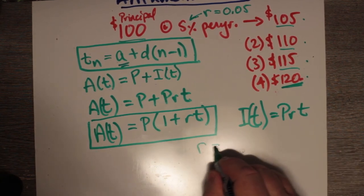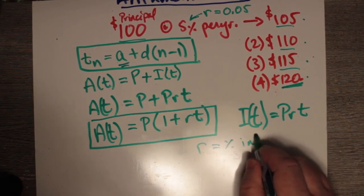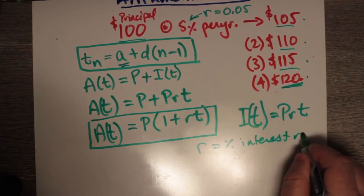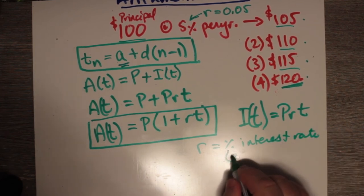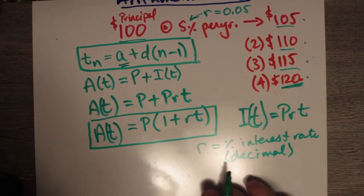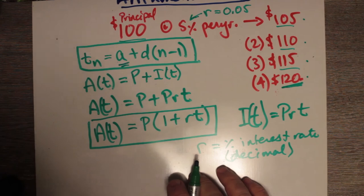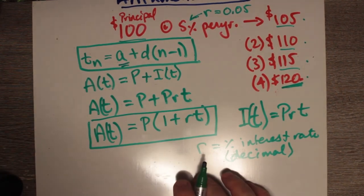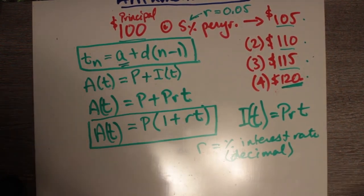R is percent interest rate expressed as a decimal, meaning that if you have a 1% interest rate, then it's 0.01. A 10% interest rate is 0.1. A 5% interest rate is 0.05. That sort of thing.